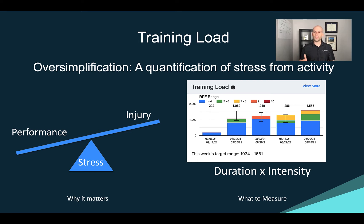We measure training load in a simple, reliable way that takes into account all the different factors that could contribute to it. At its basic level, we multiply the duration in minutes of an activity by the rate of perceived exertion that the athlete self-reports. So if you go for a run for 60 minutes and rate it as a 4 out of 10 intensity, that would be 240 points for training load.